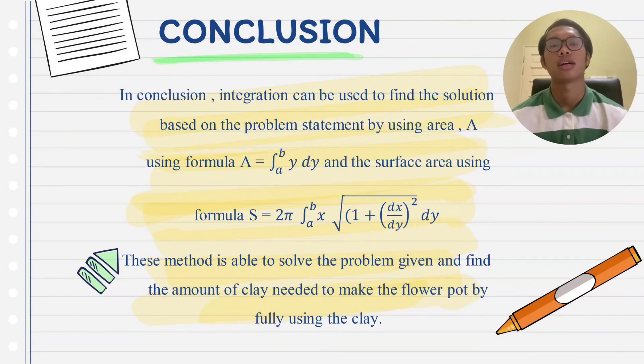In conclusion, integration can be used to find the solution based on the problem statement by using area A, using formula A equal to integral from a to b of y dy, and the surface area using formula S equal to 2 pi integral from a to b square root of bracket 1 plus dx over dy squared dy. This method is able to solve the problem given and find the amount of clay needed to make the flower pot by fully using the clay.